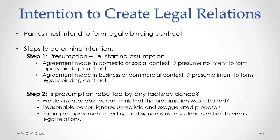Step two, we ask: is that presumption rebutted by any of the facts or evidence of the particular case? So here we actually look at what happened, and then we ask whether a reasonable person would think that the presumption was rebutted. For example, if there was an agreement made between two family members, the presumption would be that there was no intent to form a legally binding contract — that would be step one. For step two, we actually look at what happened. So let's say the two family members put their agreement in writing and both signed it. A reasonable person would think that when people put something in writing and sign it, that is a clear intention to form a legally binding contract.